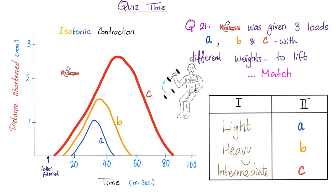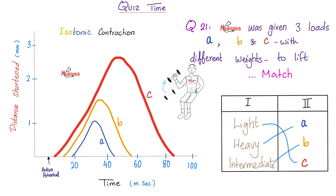Let's answer the question of the previous video. Medicosis is trying to lift three loads — one is light, one is heavy, one is in between. According to the graph, the light is C. If it's the lightest weight, it's going to be the easiest to lift, and therefore my muscle will contract a lot and shorten a lot. B is in the middle, and A is the heaviest — I could barely lift it, barely shorten my sarcomeres.